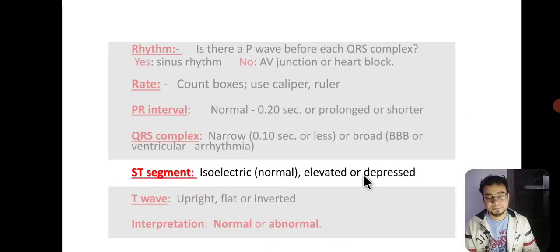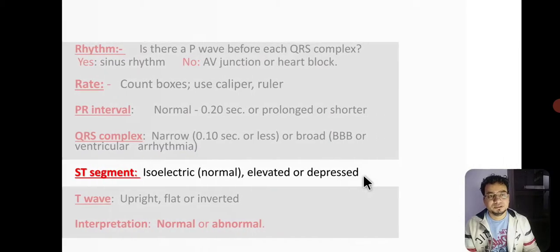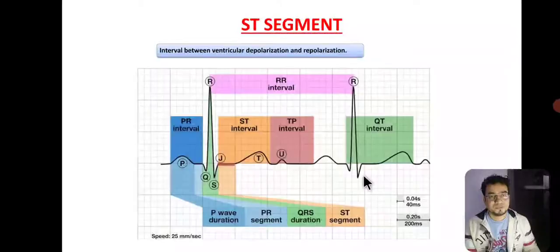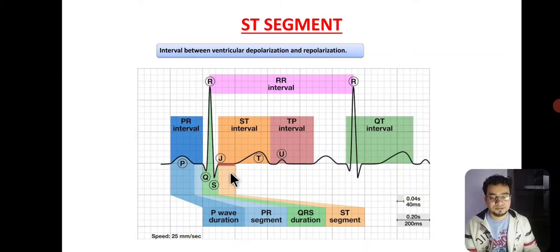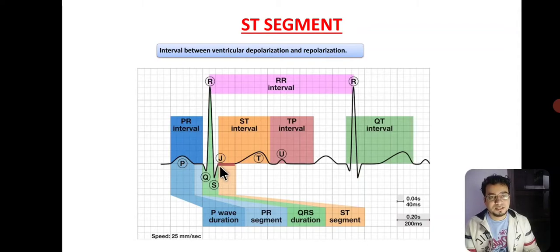After QRS complex, we will move to the ST segment. The ST segment is the interval between ventricular depolarization and repolarization. Its elevation or depression is associated with various cardiac pathologies. It starts at the J point — where the S wave ends — on the isoelectric line. If the J point is elevated or depressed, that is also suggestive of ST elevation or depression. The ST segment ends at the initiation of the T wave.